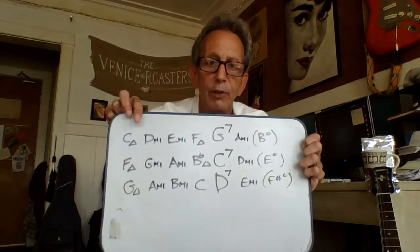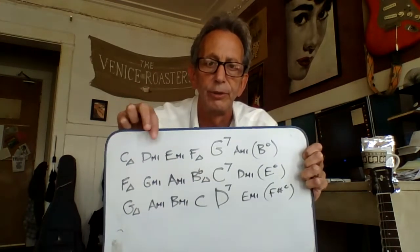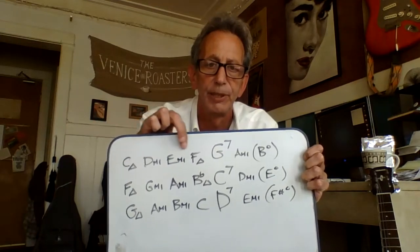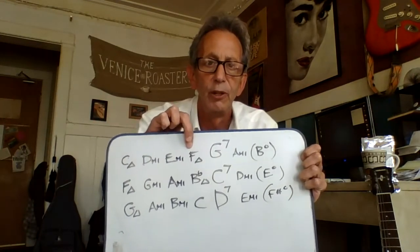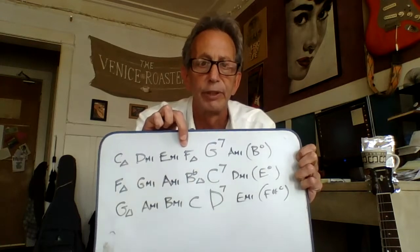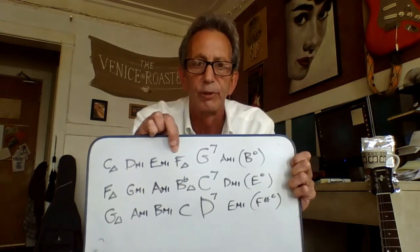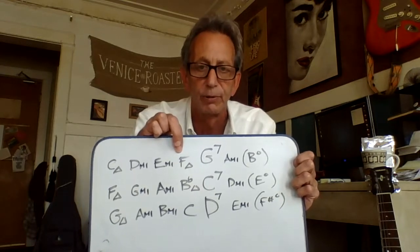Now if I go up four steps — one, two, three, four — this is my one chord, two, three, four. Notice the four chord is purely major, and if I were to extend a seventh onto it, it wouldn't become a dominant seventh chord — it would become an F major seven chord. Major sevens are anything but dominant; they have a very soft, fluffy, cloudy sound, whereas a dominant seven has much more motion inside of it.